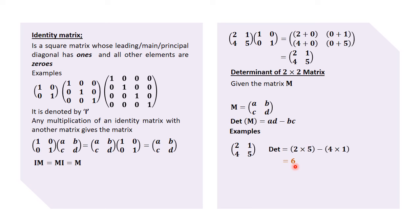We're not going to deal with matrices of order three by three or bigger here. For the last example, we have the matrix [4, 3; -2, 6]. The determinant is 4 times 6 minus negative 2 times 3, which gives us 30. Please check out the next part on the inverse of a matrix. As always, please like, share, subscribe, and thank you.